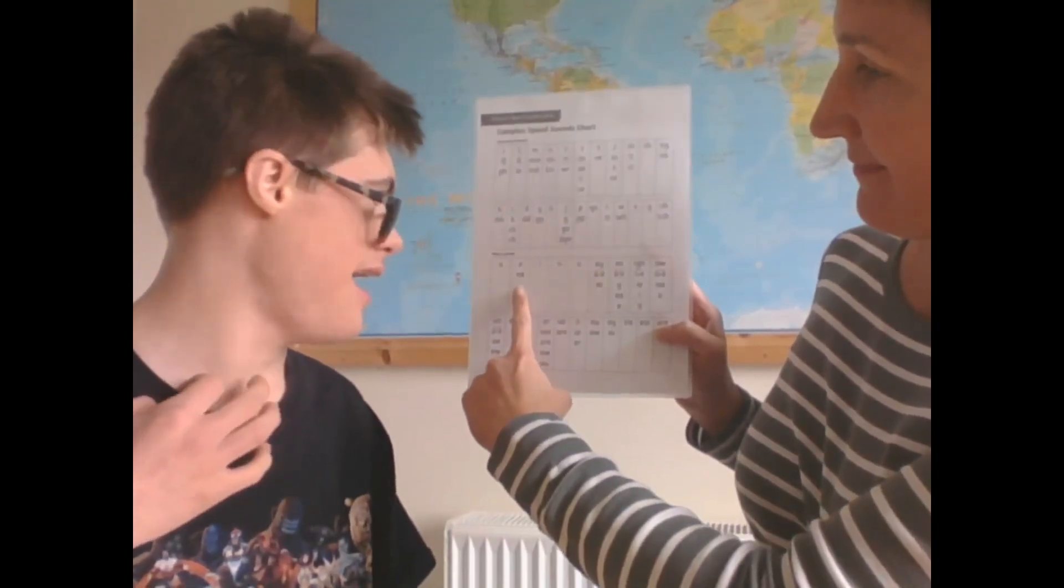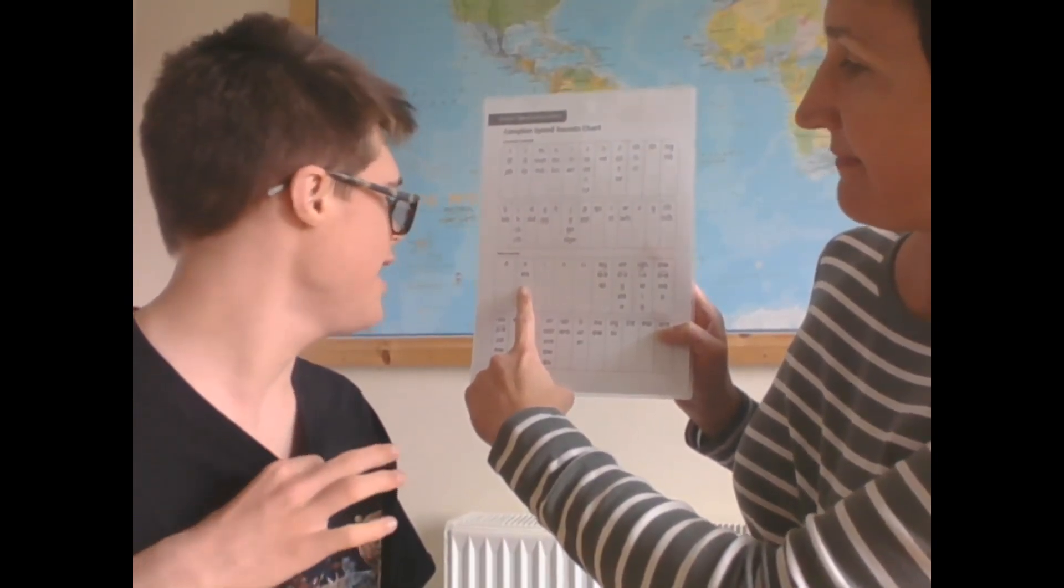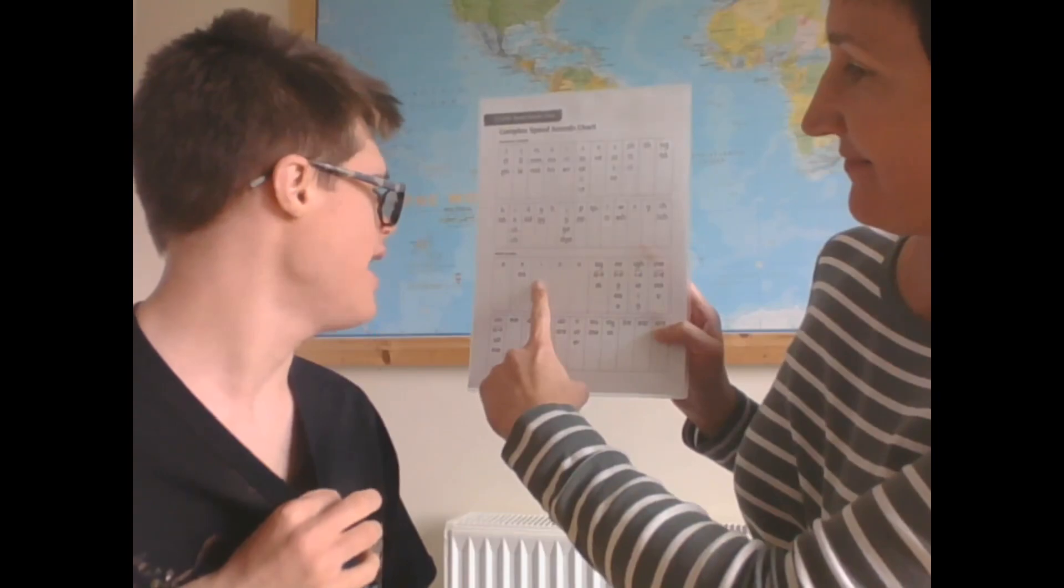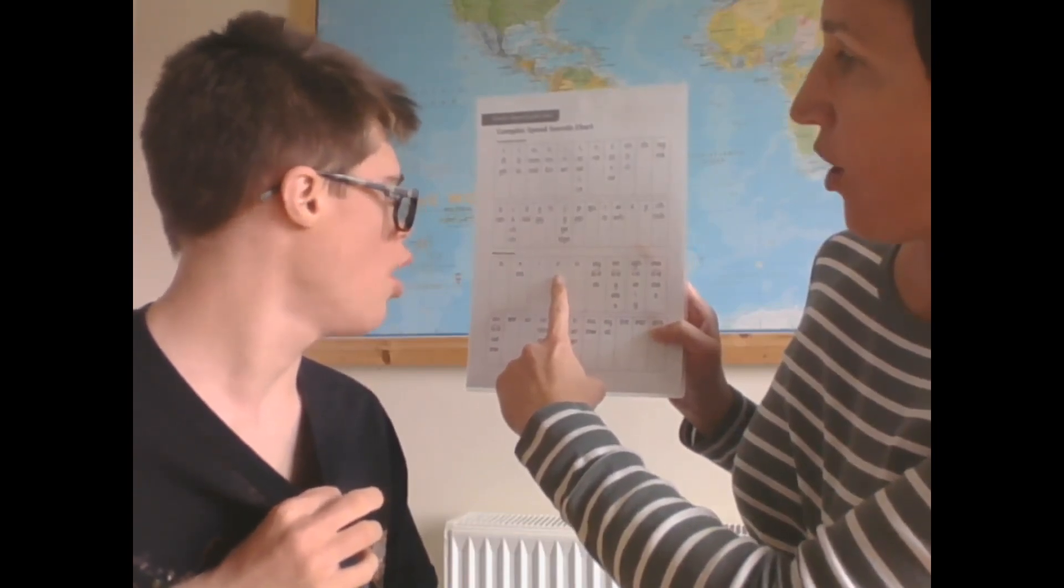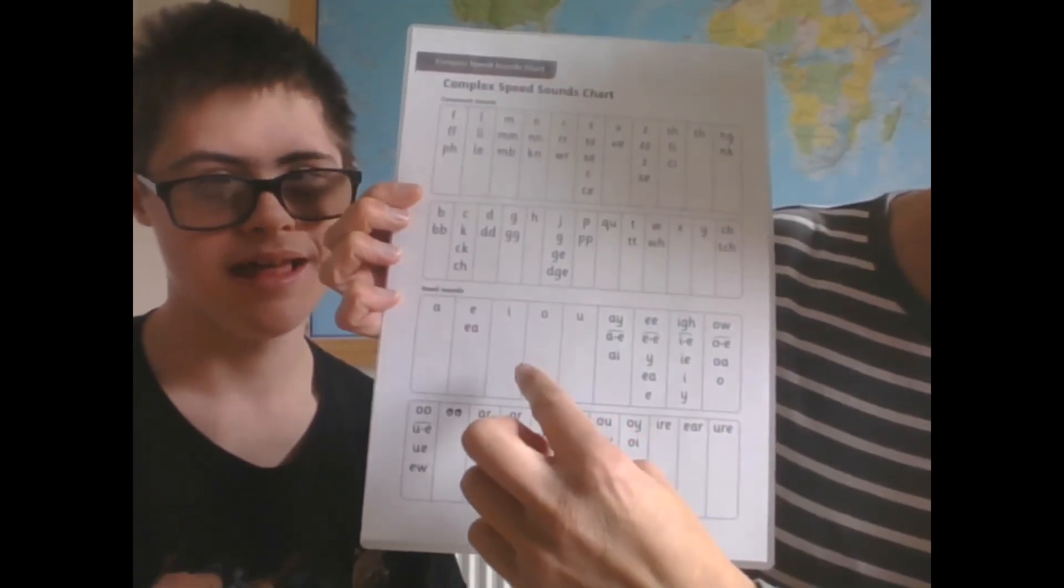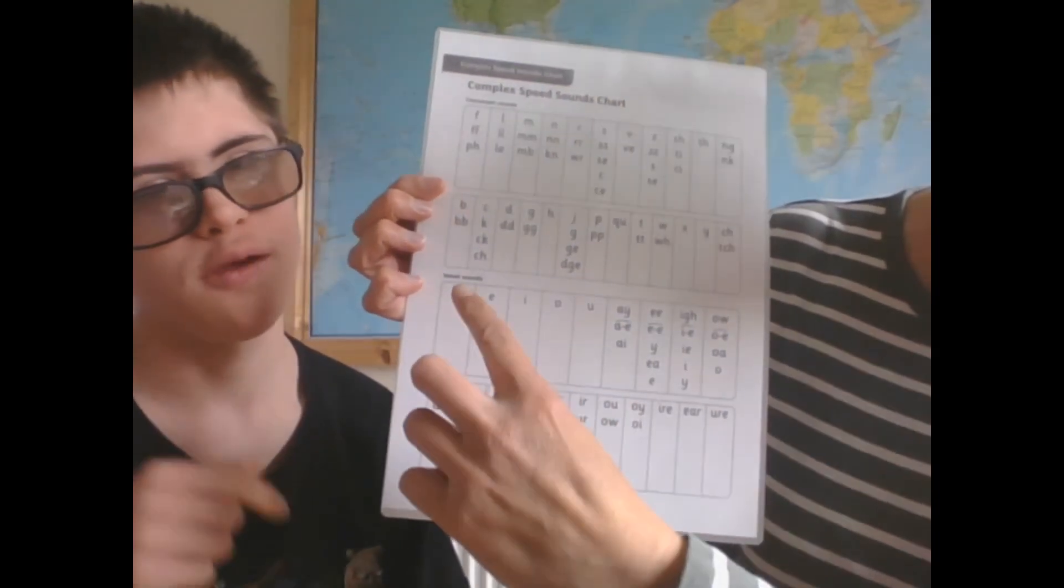We've got A, E, I, O, U. Those first five sounds look a little bit tricky, but actually they're the short vowel sounds: A, E, I, O, U.